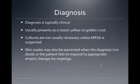The diagnosis of impetigo is usually clinical. It usually presents as a yellow to golden crust. Cultures are not usually necessary unless MRSA is suspected, and skin swabs may also be warranted when the diagnosis is in doubt or the patient fails to respond to appropriate empiric therapy.